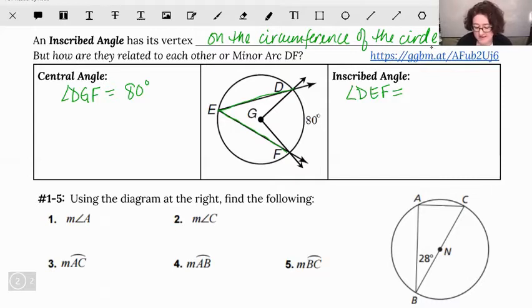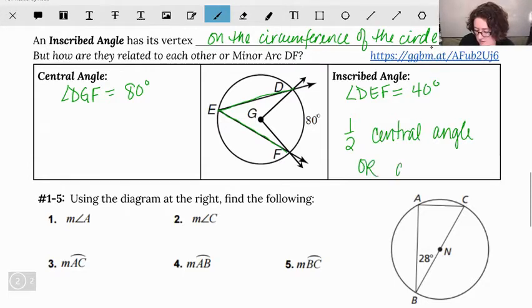So measure of angle DEF is actually going to be 40 degrees. It's going to be one half the central angle or the arc that it intersects. So let's look at this in a few different examples.